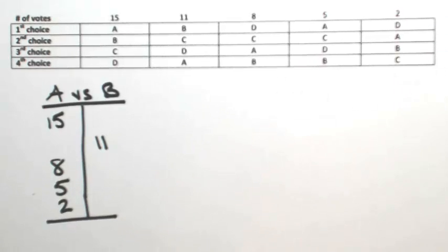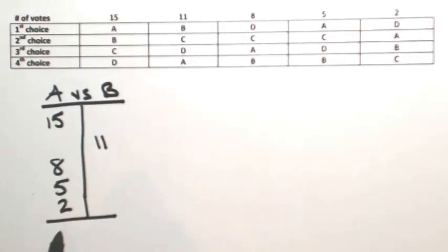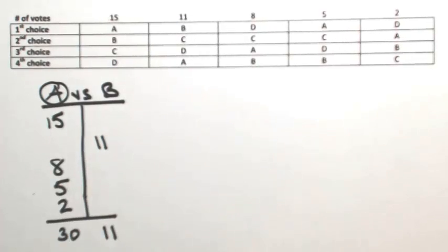Okay, so adding all this together, you find that A gets 30 votes to B's 11 votes. So that means that A wins that competition. So this means that B cannot be the Condorcet winner.